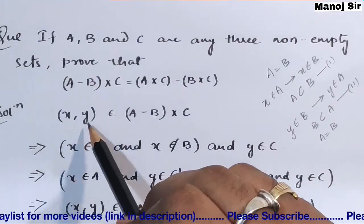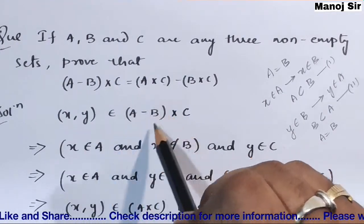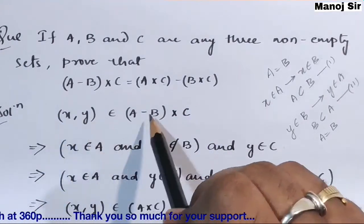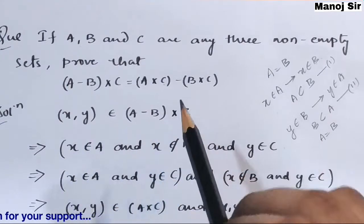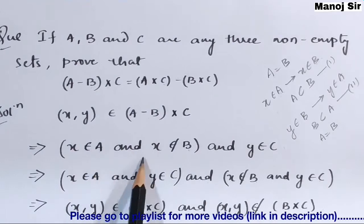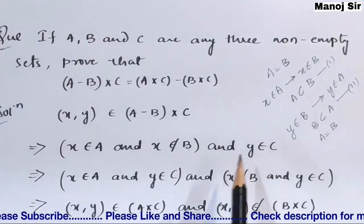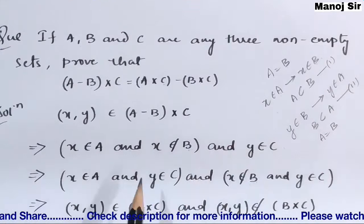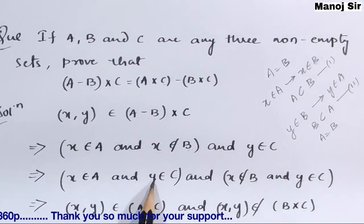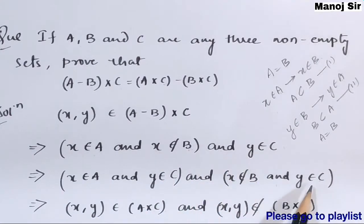Let x comma y be an element belonging to (A minus B) × C. Because of the product sign, element x belongs to (A minus B) and element y belongs to set C. Now, A minus B means x belongs to A and x does not belong to B. Combined with the product, we also have y belongs to C. Expanding this gives: x belongs to A and y belongs to C, and x does not belong to B and y belongs to C.